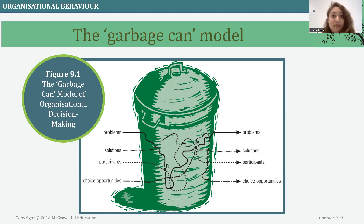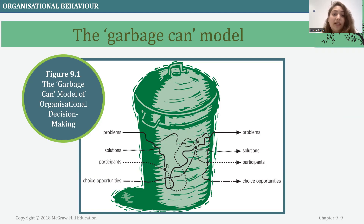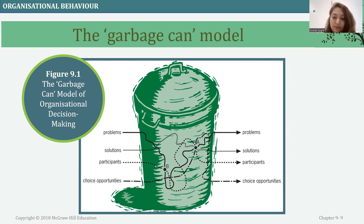The next model is the garbage can. When we face any problem within the organization or from a personal perspective, there are different problems that come our way and different types of solutions to those problems. There are certain participants who contribute to the problem or the solution, and we have some choices of opportunities to resolve that problem.